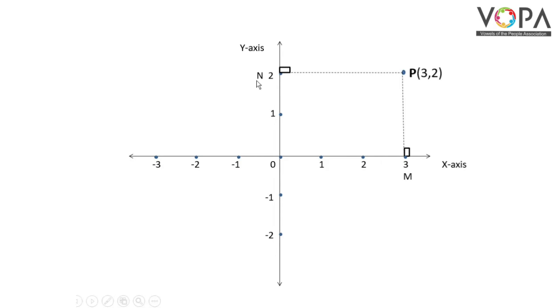The point N is on Y-axis and the coordinate of point N is 2. Therefore, Y coordinate of point P is 2. Thus, the coordinates of point P are (3, 2).